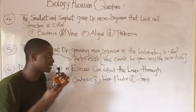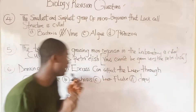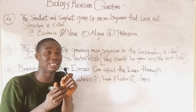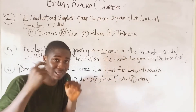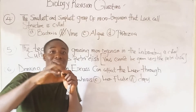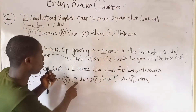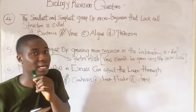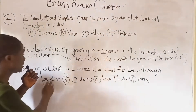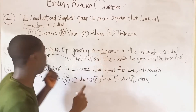Question six: drinking alcohol in excess can affect the liver through cirrhosis, where damaged liver cells are replaced by unwanted fibrous substances. Dropsy is not a liver disease but rather a kidney disease, also called edema. Jaundice is also a liver disease, but the answer here is cirrhosis.